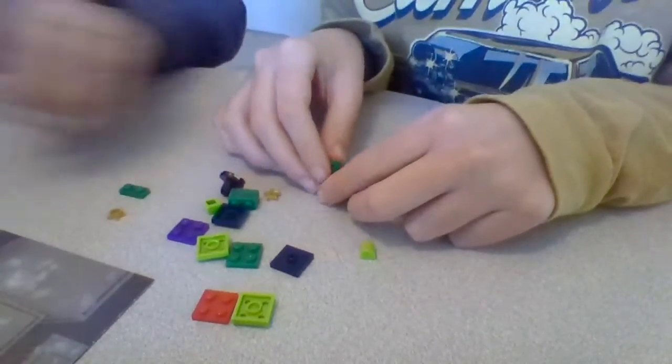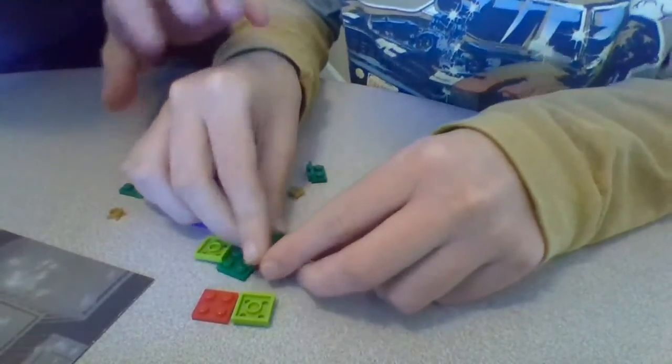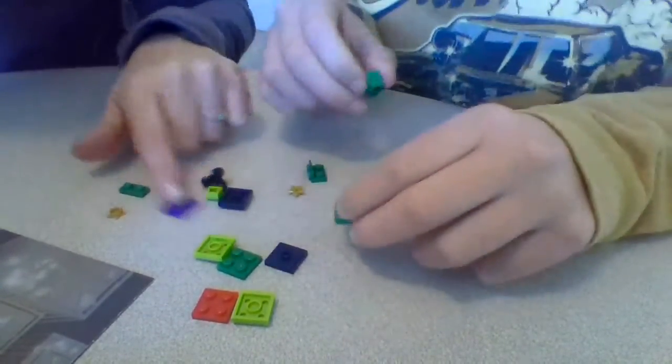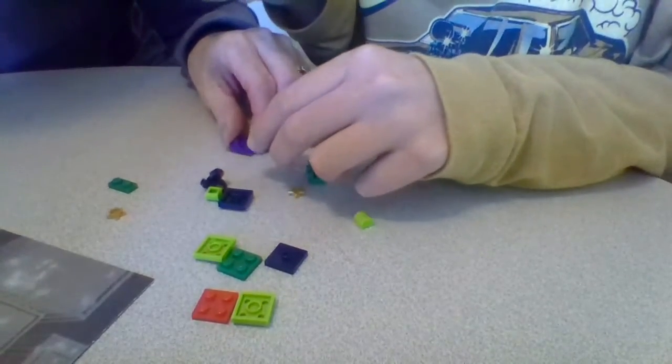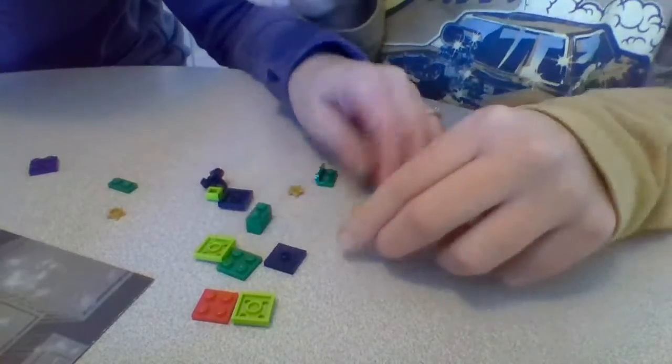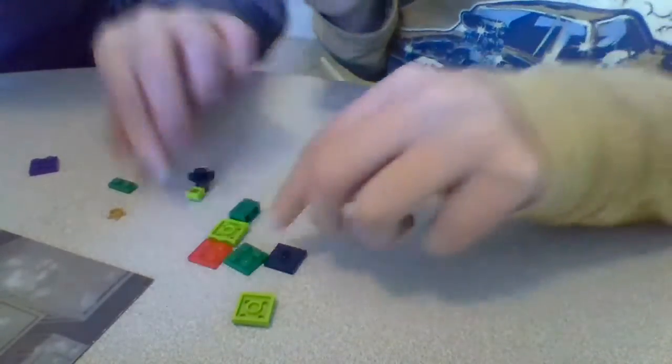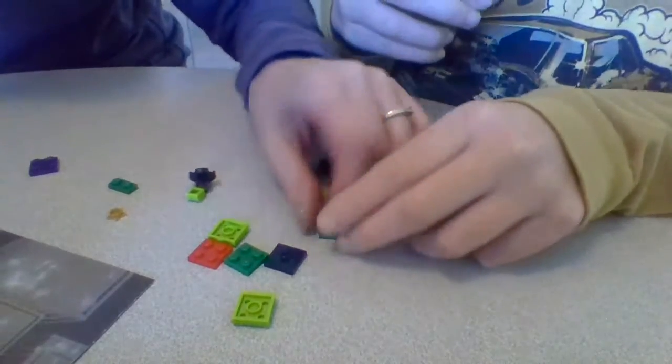So we're going to start with the blue ones because they look the easiest. And we need the bottom piece which is here. No, blue. Where's the blue ones? Okay, bottom piece which is here and then the red piece on top. Nope. Charles, listen to my words.